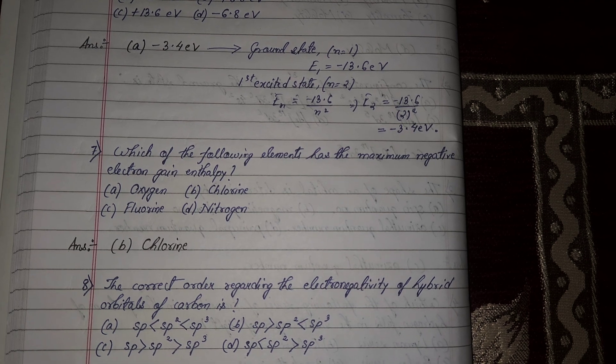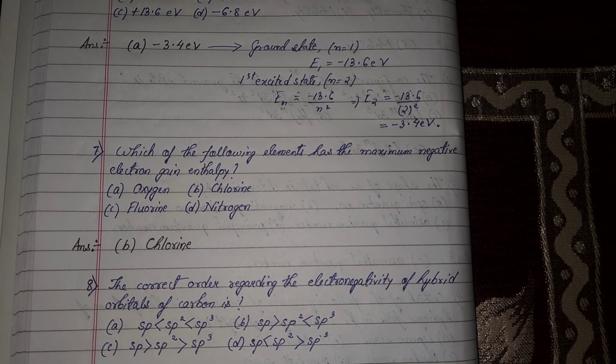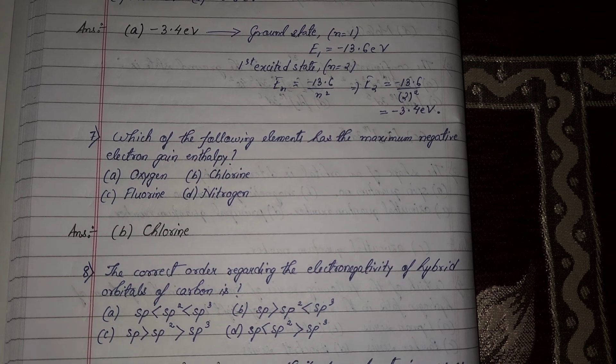Next question number 7, which of the following elements has the maximum negative electron gain enthalpy? Maximum negative electron gain enthalpy, chlorine.